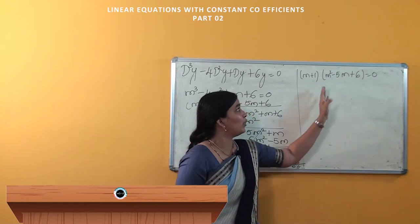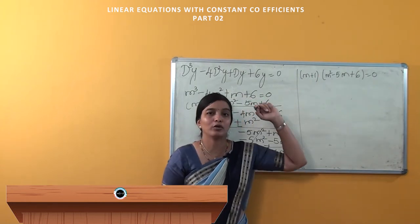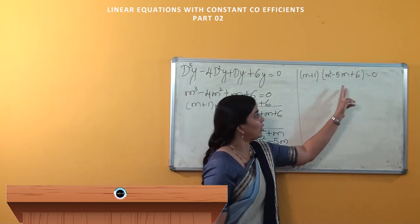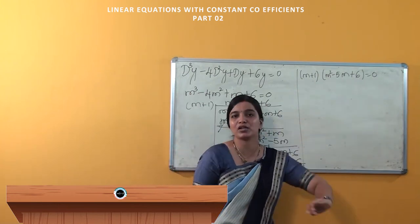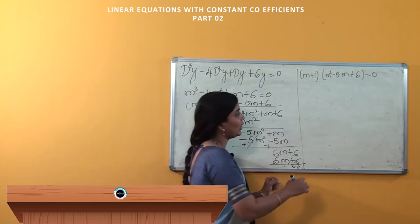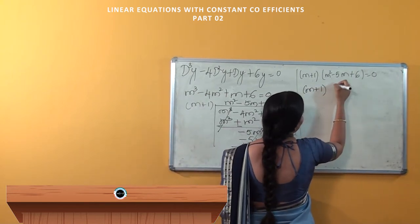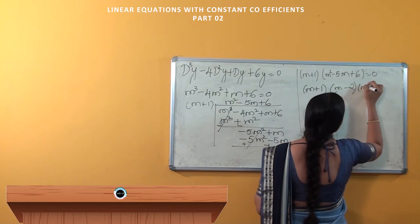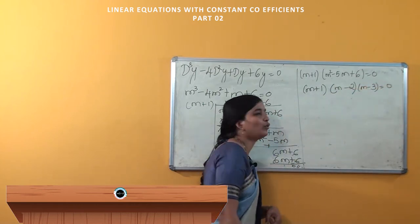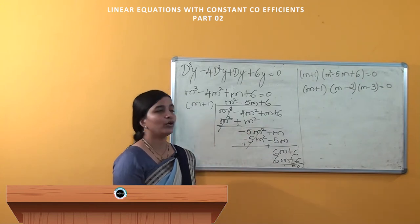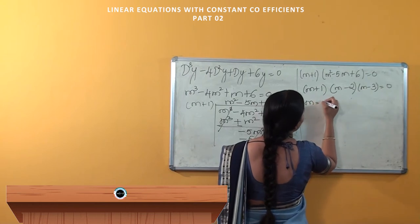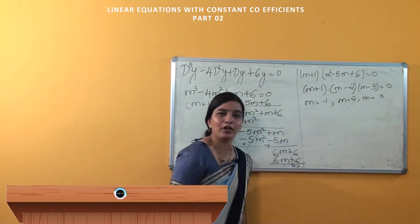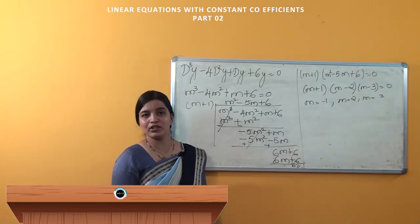So one of the roots is m = −1. Now by solving this quadratic equation, we have to obtain the other two roots. On multiplication we have to get 6, and on addition we have to get −5. Clearly you can write it as (m − 2)(m − 3) = 0, since 2 × 3 = 6 and −2 + (−3) = −5. So m = −1, m = 2, and m = 3 are the three roots of the auxiliary equation.